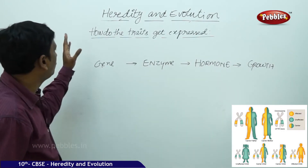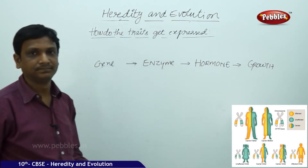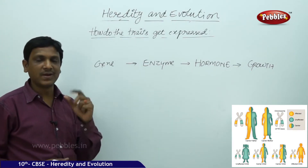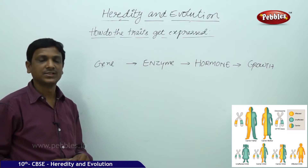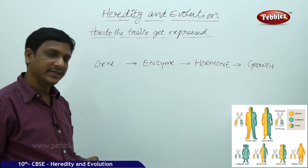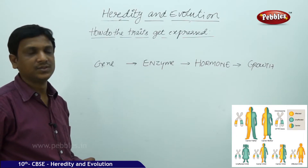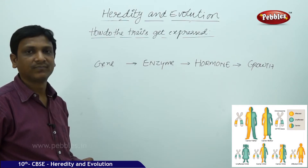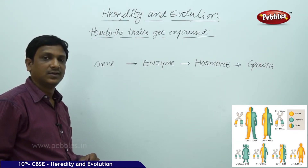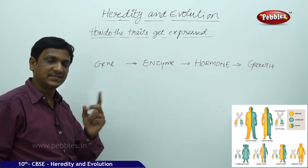Now let us see how the traits get expressed. Each trait is controlled by two genes. So what is a gene? A gene is a part of DNA. DNA is the genetic material, and it is present in the nucleus. The DNA consists of two genes for each character.